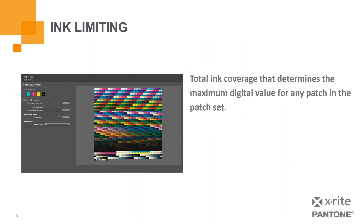For the most part, the entire printer profiling process is the same. You still choose a number of patches to print, scan, and finally generate the profile. The difference comes in a couple of settings. In CMYK printer profiling, you'll notice in the screenshot there are options for patch set ink limiting as well as linearization. Linearization is something I will discuss a little bit later, but let's take a look at patch set ink limiting.